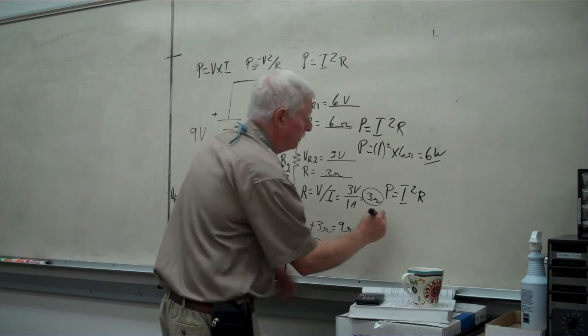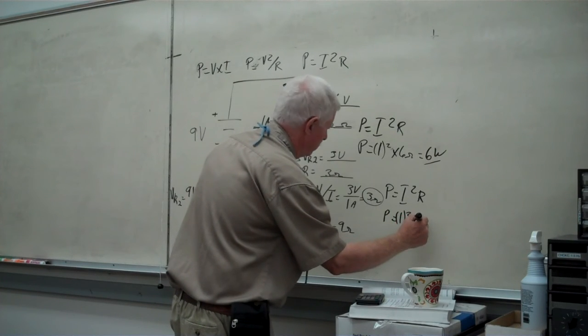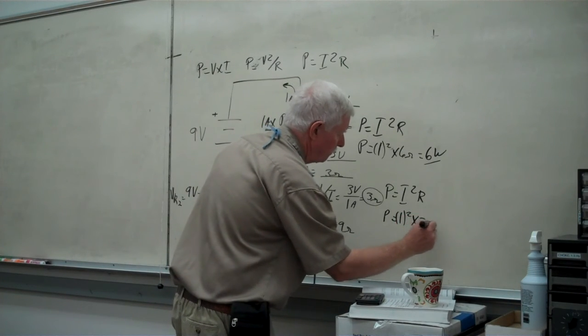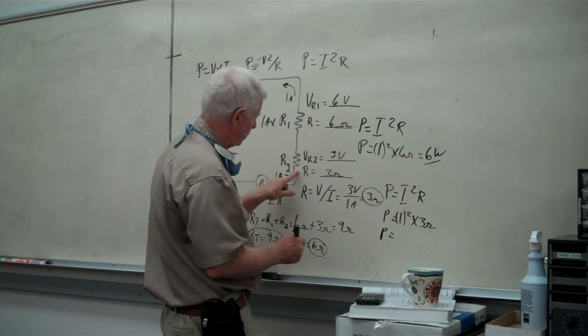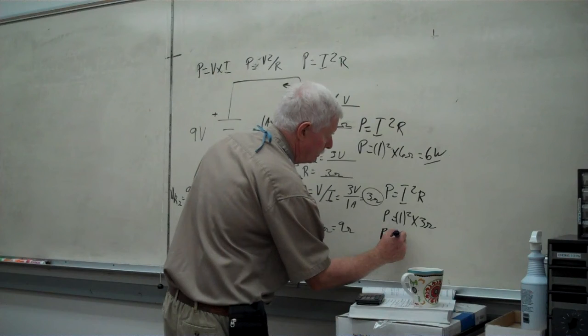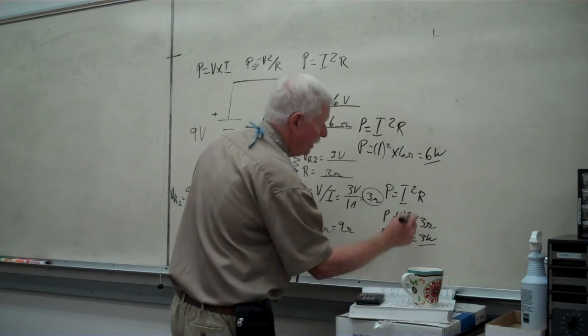So, again, power is equal to 1 ampere squared times 3 ohm. The total amount of power dissipated by this device, R2, is going to be 1 times 3 or 3 watts.